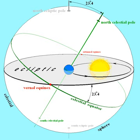Longitude is measured positively eastward, zero degrees to 360 degrees, along the ecliptic from the vernal equinox, the same direction in which the Sun appears to move.